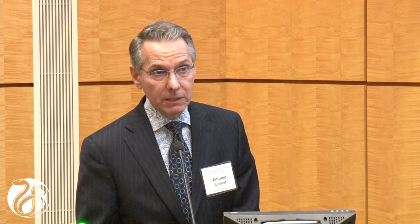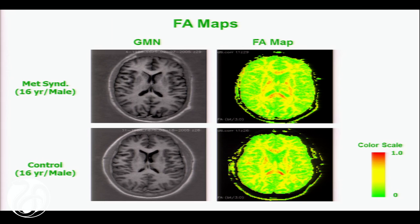On the top you have a kid who has metabolic syndrome, and on the bottom a kid who is a control. There are three colors in the fractional anisotropy maps. The red is where the fibers are most compact — the corpus callosum, internal capsule — because it has the most fractional anisotropy, so the water is very constrained. The yellow is the rest of the white matter, and the green is where the CSF and neurons are — the gray matter — where only membranes prevent water from moving freely.